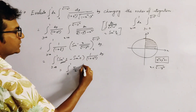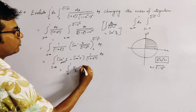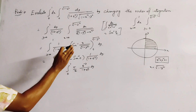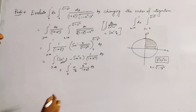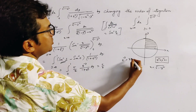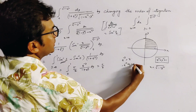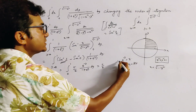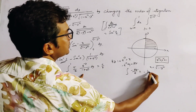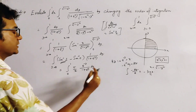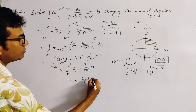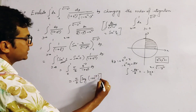We rewrite 1 over (1 plus e to the power y) as e to the power minus y over (1 plus e to the power minus y) by multiplying numerator and denominator by e to the power minus y. Then substituting e to the power minus y equals z, so minus e to the power minus y dy equals dz. The integral becomes pi over 2 times integral of minus dz over z, giving minus log z, which yields pi over 2 times log(1 plus e to the power minus y), evaluated from 0 to 1.